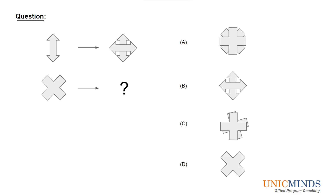Now if you have answered option D, it is the right answer. When you look at the double arrow figure provided in the top question, the double arrow figure has been shifted by 90 degrees in the first relationship. Both together form a top arrow and a vertical arrow combined with a horizontal arrow. So a vertical arrow figure became a horizontal and vertical figure because the vertical arrow was shifted by 90 degrees.